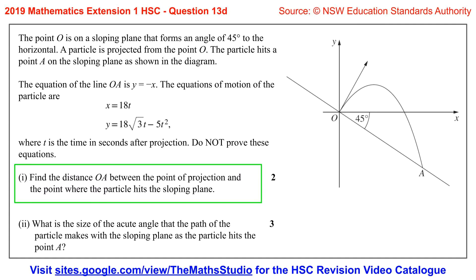The equation of the line OA is y equals negative x. The equations of motion of the particle are x equals 18t and y equals 18 root 3t minus 5t squared, where t is the time in seconds after projection. Do not prove these equations.